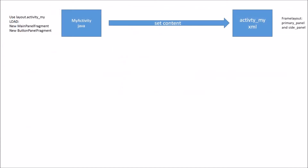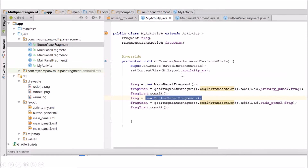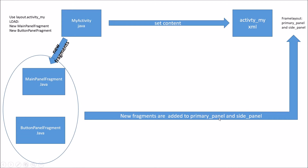The new main panel fragment loads two fragments — main panel fragment and button panel fragment — and it does that in MyActivity.java by setting a new main panel fragment and then new button panel fragment. So it's loading these two fragments for the first time in MyActivity.java. These new fragments are added to primary panel and side panel — those were the names given to those frame layouts.